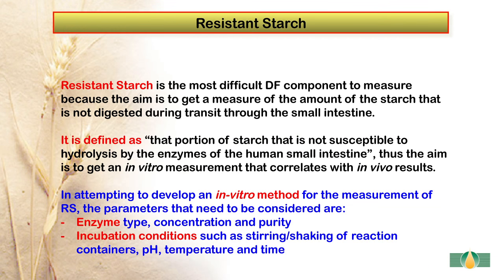Resistant starch is the most difficult dietary fibre component to measure, because the aim is to get a measure of the amount of starch that is not digested during transit through the small intestine. Resistant starch is defined as that portion of starch that is not susceptible to hydrolysis by the enzymes of the human small intestine, thus the aim is to get an in vitro measurement that correlates with in vivo results.